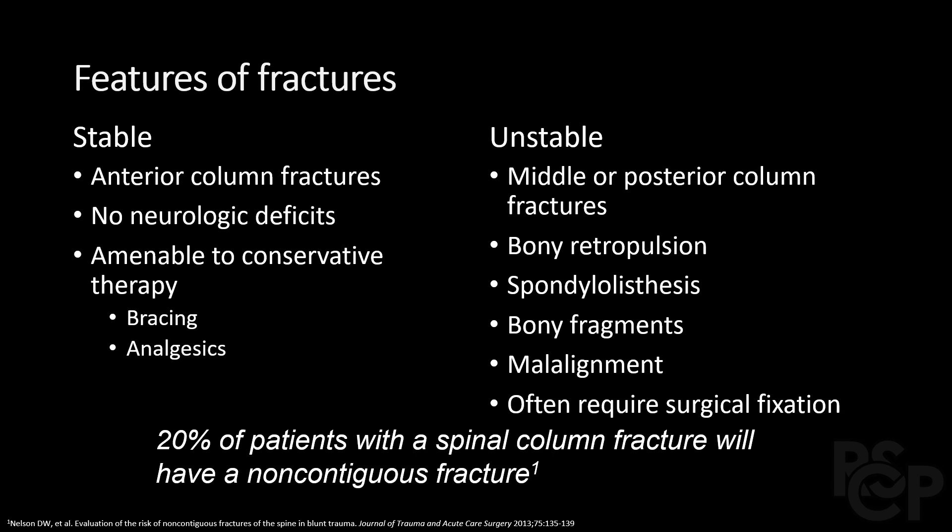Spondylolisthesis, which is a slippage of one vertebral body over another, can also occur. Malalignment often occurs when the ligaments are compromised and unable to hold the bony anatomy in place. Patients with unstable fractures very often require surgical fixation. The most important take-home message is this: in the setting of trauma, if you find one single spine fracture, that is your indication to image the entire spine, as up to 20% of trauma patients with a spine fracture have another fracture in a different segment.